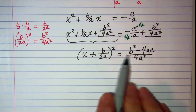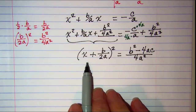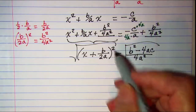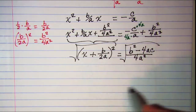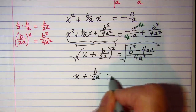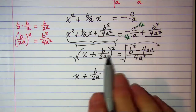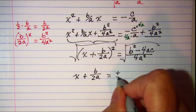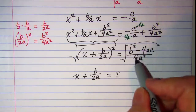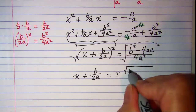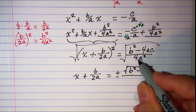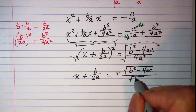Now I'm going to solve this equation with the square root property, which says I can square root both sides. So I have x plus b over 2a on the left side. The square root property says that when you square root both sides you have to write plus or minus on the right side, so I have plus or minus the square root of b squared minus 4ac in the numerator and the square root of 4a squared in the denominator.